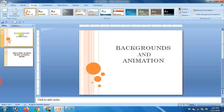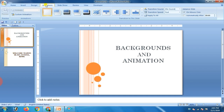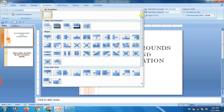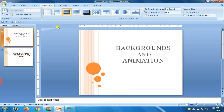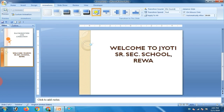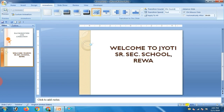Our next topic is applying the slide transition. The special effect with which a slide is introduced in the presentation is called the transition effect. For this, click on the Animation tab. Now scroll through the slide transition gallery and click on the transition effect you want to apply to the current slide. You can choose any one of them. If you want to see the preview, you can click on the Slideshow View.